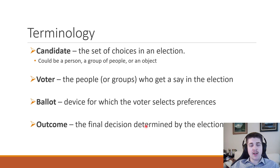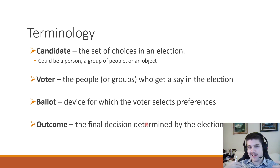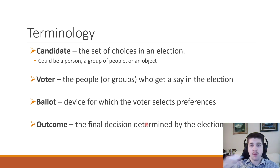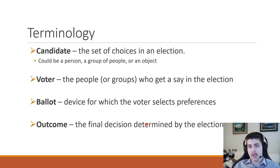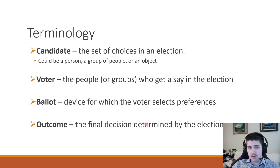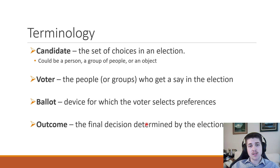In each election there has to be a set of candidates — basically, what are we choosing from? In an election for a representative, it would probably be a group of people and we want to choose the best person, or sometimes we might elect more than one person depending on the circumstance.